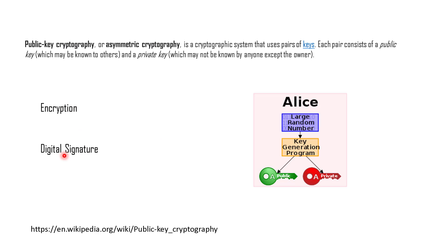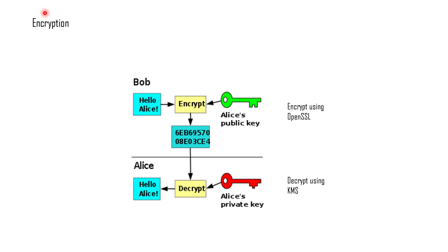Let's talk about encryption. We have Alice, who has created a public-private asymmetric key pair. The private key stays with Alice, and she shares the public key with Bob — though this public key can be shared with anyone. Now Bob wants to send a message to Alice, so he will encrypt the message 'hello world' using the public key Alice gave him.